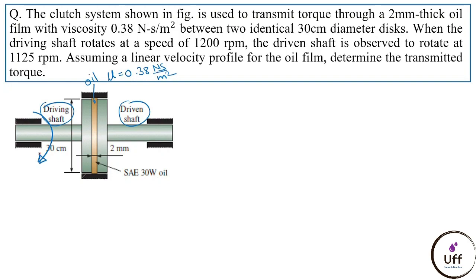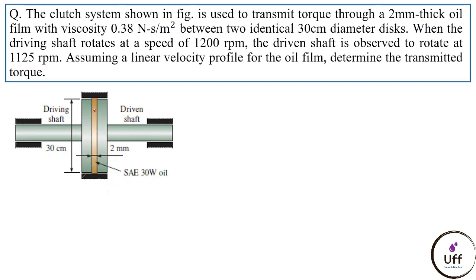The driving shaft rotates in one direction and, because of the oil between them, the driven shaft also rotates in the same direction. There are losses in the oil, and we want to find how much torque is transmitted. The velocity inside the oil changes along the radius and also along the thickness — from driving shaft to driven shaft the velocity varies, and along the radius it also varies — so we cannot find the answer directly.